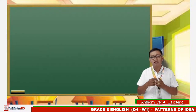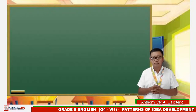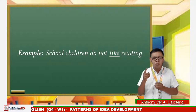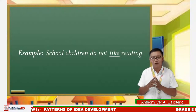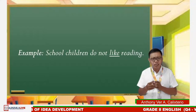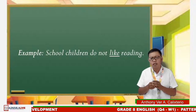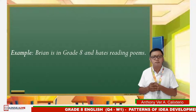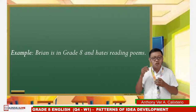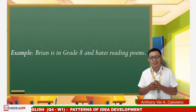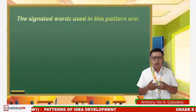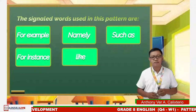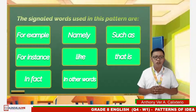General information is normally vague and represents a broad description of something. Example: 'School children do not like reading.' The word 'children' refers to all children everywhere. Specific information refers to exact, precise facts or descriptions of something mentioned in the text. Example: 'Brian is in reading class and hates reading poems.' Here, 'poems' is a specific topic in reading which Brian doesn't like. The signal words used in this pattern are: for example, namely, such as, for instance, like, there is, in fact, in other words, indeed.